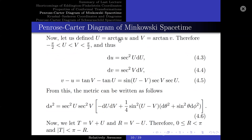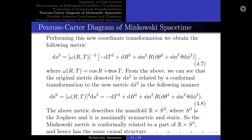Now, let capital U equal arctan(u) and let capital V equal arctan(v). Therefore, capital U and capital V are bounded between minus π/2 and π/2, and the derivatives are as follows. Substituting this back into the Minkowski metric, we obtain the metric in terms of capital U and capital V. Now, if we let capital T equals capital V plus capital U and capital R equals capital V minus capital U, then capital R is between 0 and π, and the absolute value of capital T is less than π minus capital R. Performing this coordinate transformation, we obtain the following metric, where Ω equals cosine(capital R) plus cosine(capital T).